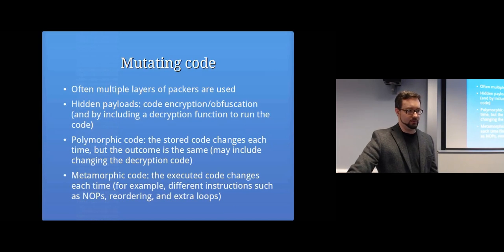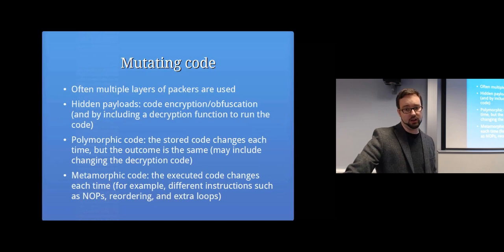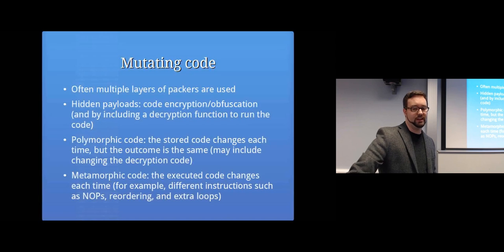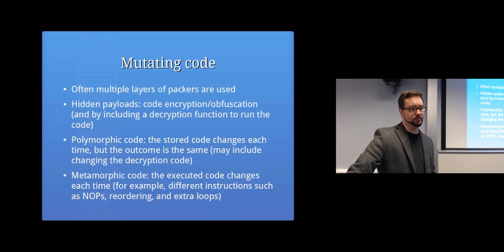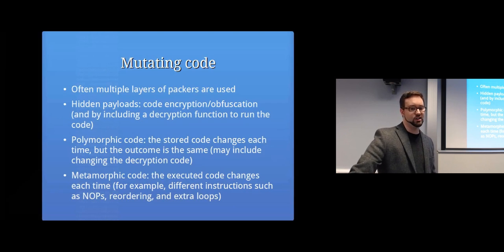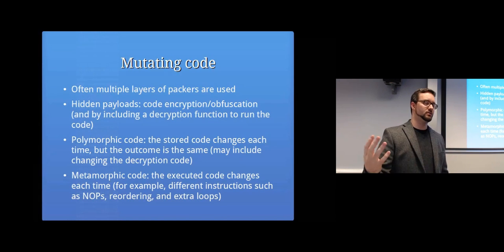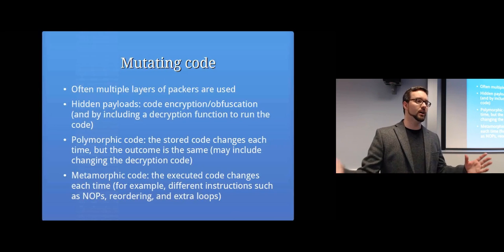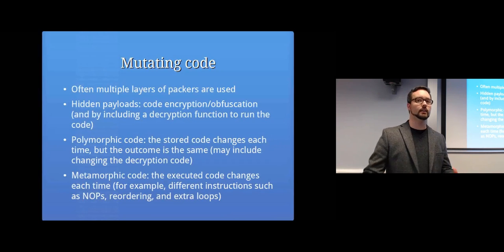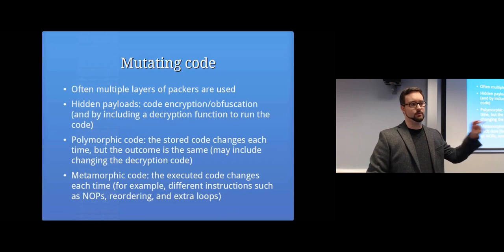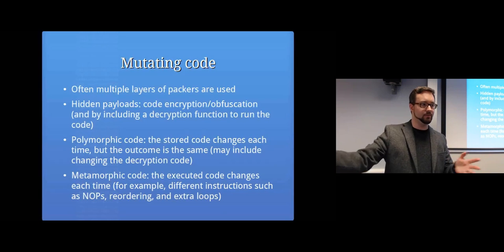Going back to what was mentioned about viruses that change themselves: there's polymorphic code, which is where the stored code changes each time but the outcome is the same — like encryption and decryption where it might change the code used for encryption so that it's not detected. There's also metamorphic code, where the executed code changes each time. The program itself changes — it might add a bunch of no-ops, which are instructions that do nothing, or use different instructions that achieve the same thing. For example, instead of using a certain CPU register to store something, it stores it into a different register instead.